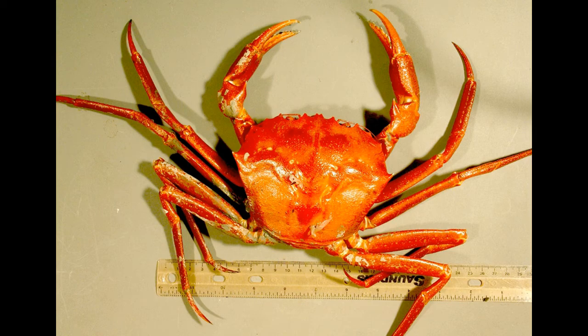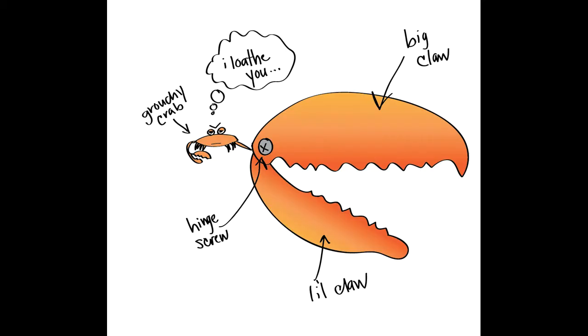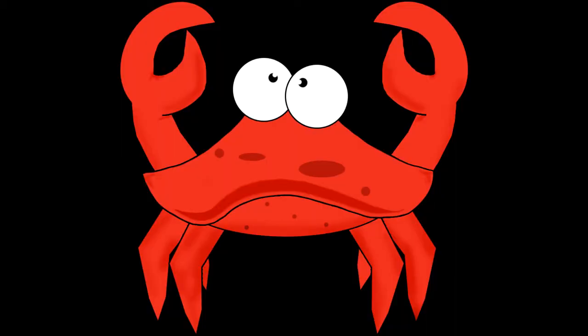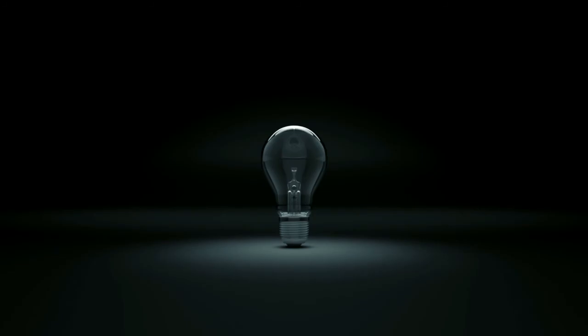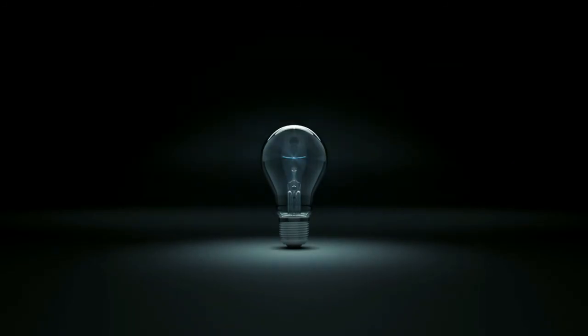The crab should not only have bigger claws, but both the top and bottom part of the claws should be able to move. Also, the crab should have six legs. Special thanks to Mandela Affected and Scott Harrison for pointing this out.